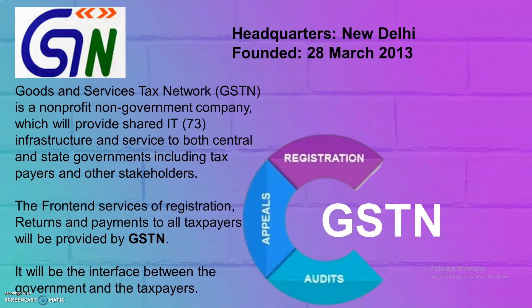Now on your screen you can see the GSTN. GSTN is a networking system. It is basically a non-profit, non-government company. It is a kind of outsourcing where 73 IT companies assist the government in taking important taxation decisions and basic decisions about networking. GSTN has been set up by the government as a private company under Section 25 of the Companies Act 1956.